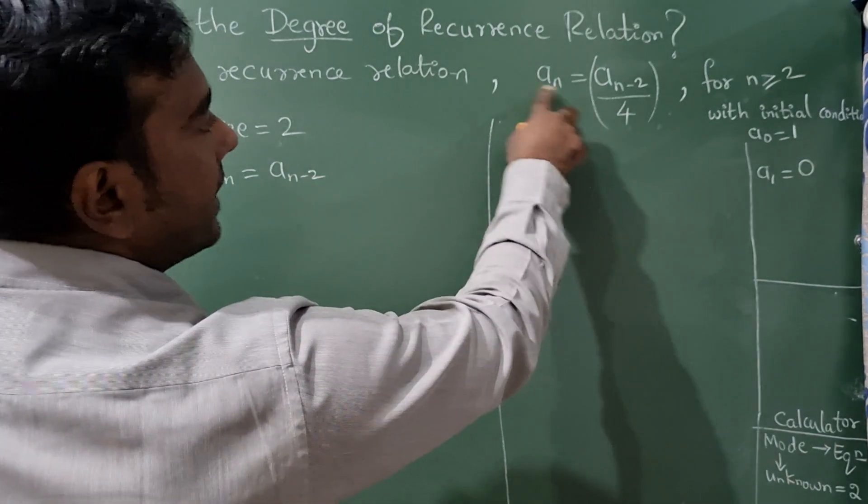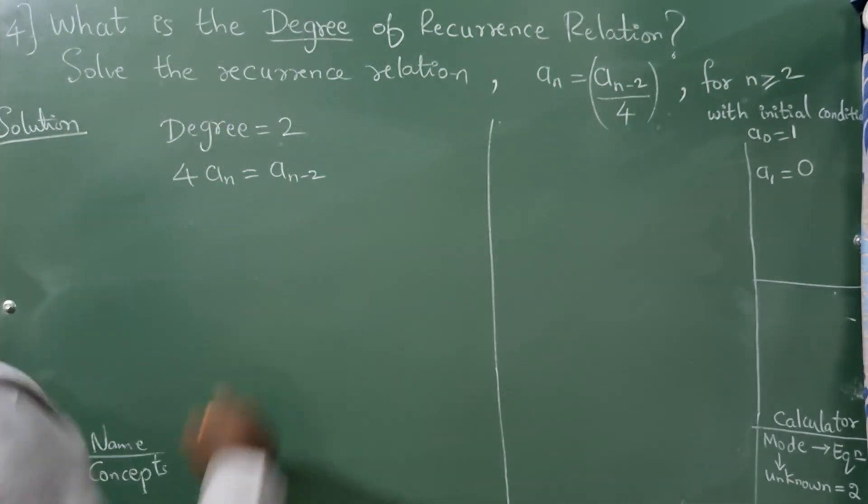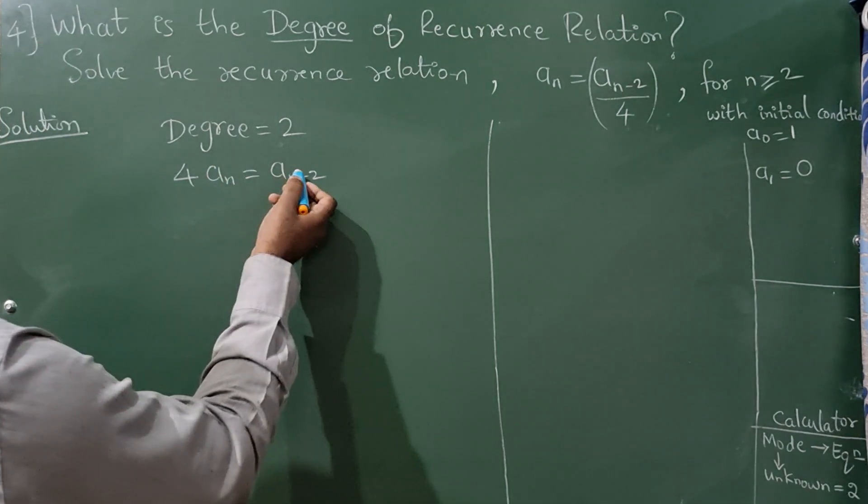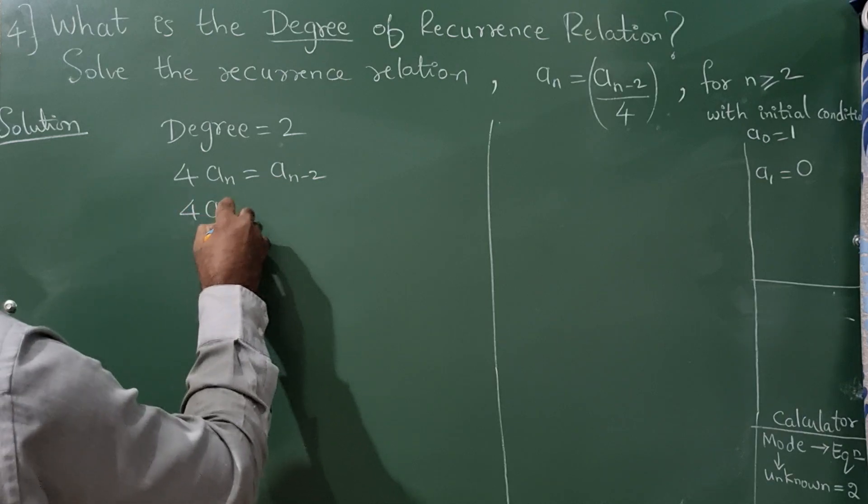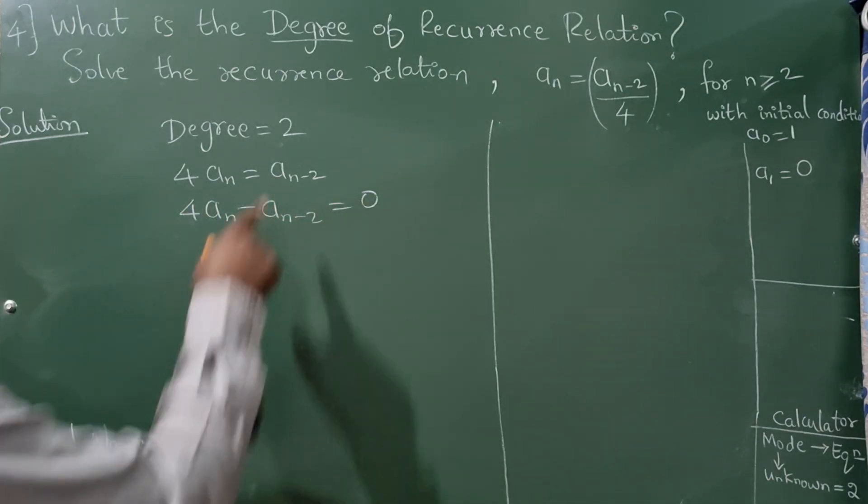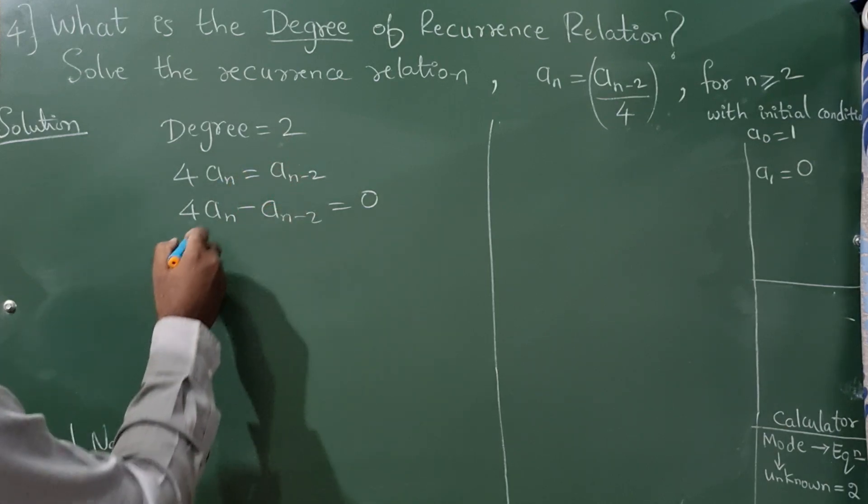For this equation I have cross multiplied. Now we need to find characteristic equation and roots. So I will take this on the left hand side. Since the degree is 2 because of n-2, I will write here 4r².